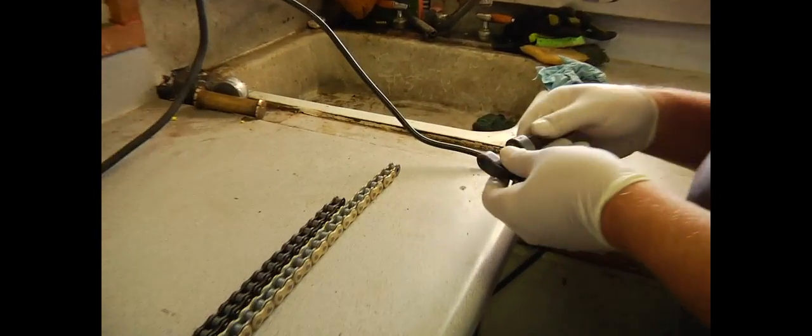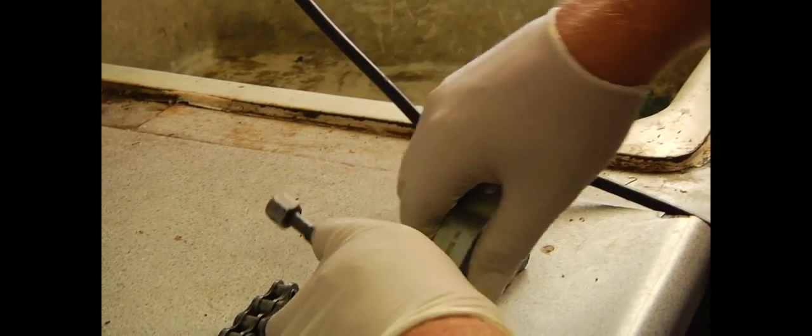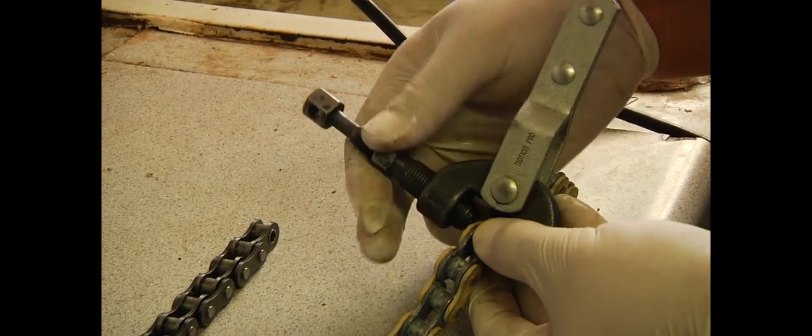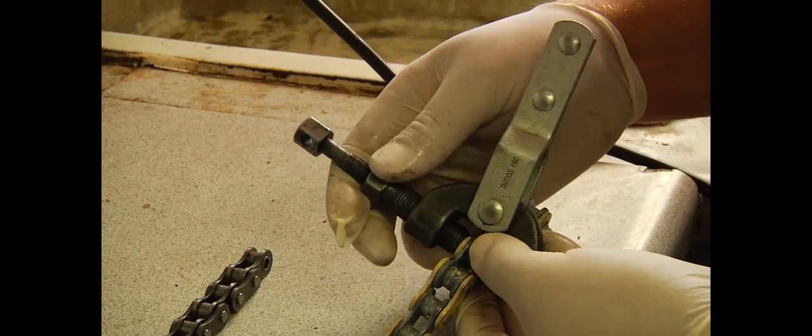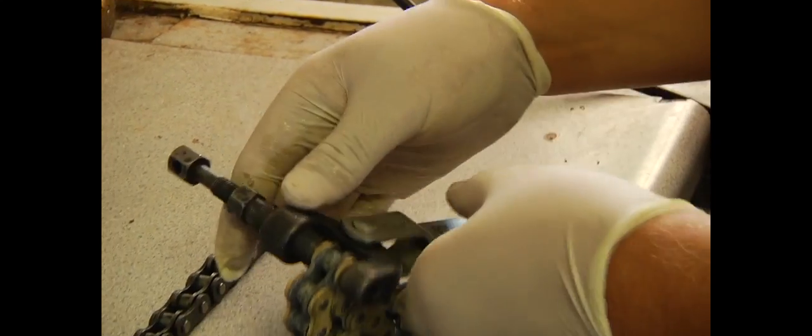So now we've found our mark where we need to cut the chain. And Motion Pro has a cool little chain breaker. It works really simple. As long as you do it right, you make sure the pin is inside and you guide it down with the pin inside and then it's butted up against the chain. So that's all snug now.